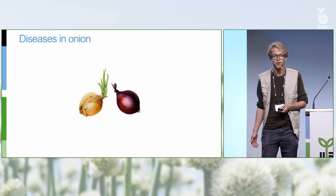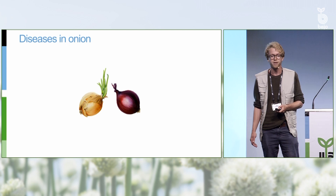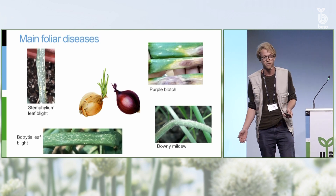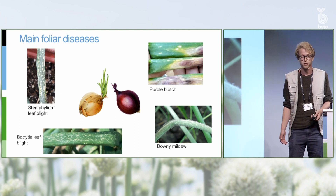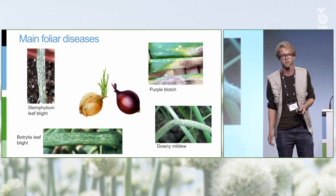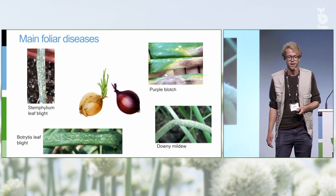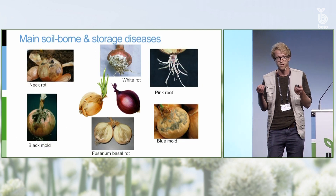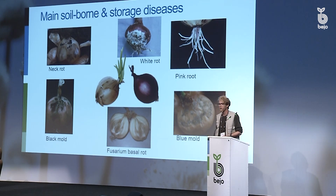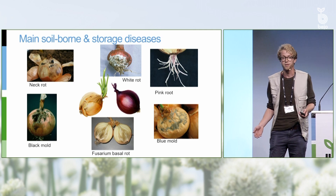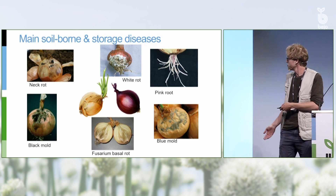Unfortunately, there is quite a lot of disease in onion. Very important foliar diseases are for example Stemphylium, purple blotch caused by Alternaria, but also Botrytis and of course mildew. We also have diseases that are in the soil or present themselves during storage — very important ones being neck rot, white rot, pink root, and molds like black mold and blue mold. And of course what we are going to talk about right now is Fusarium basal rot.